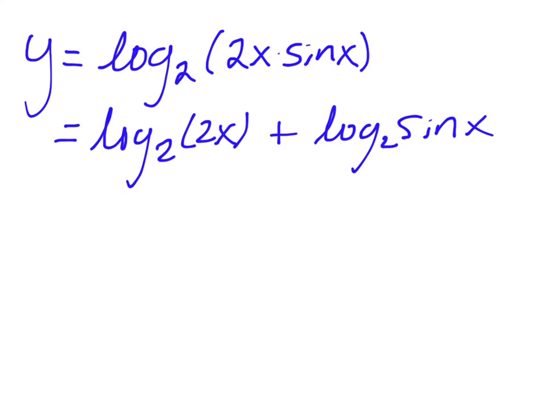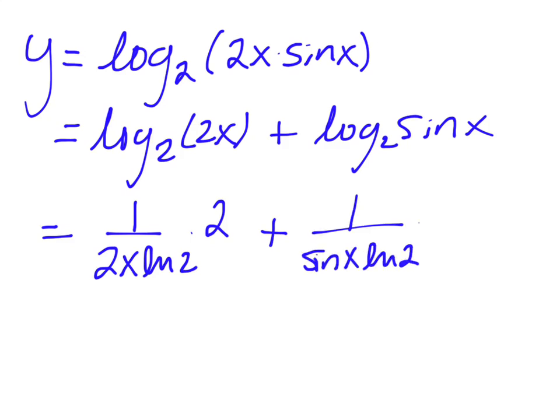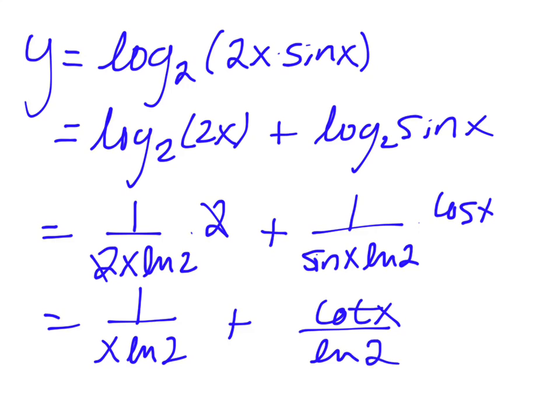We've already done derivatives like these. 1 over 2x times ln of 2 times derivative of 2x. Derivative of 2x is 2. So, times 2 and then 1 over sine of x times ln of 2 times the derivative of sine of x, which is cos of x. These 2's cancel and I'm left with 1 over x ln of 2. And I've got cos over sine, which is cotangent. So, cotan x over ln of 2.